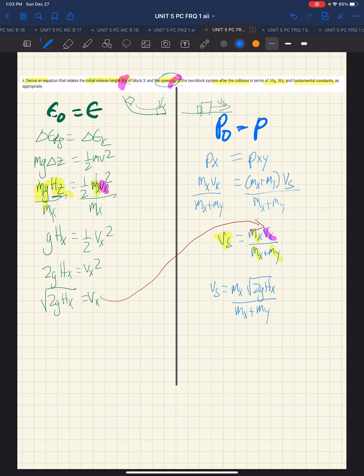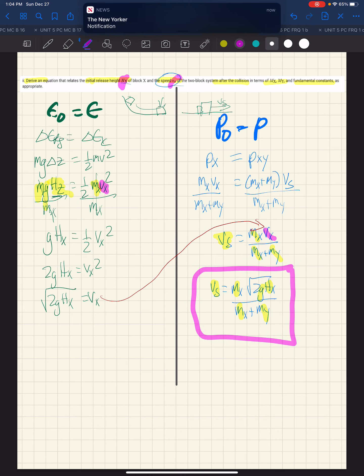And so, now we'll do a double check for what they're looking for. It says we need initial release height hx and vs. We can have mx and my and constants, g. That's the universal fundamental constant. So, we have our final answer, which is vs is mx times the square root of 2g hx all over the quantity mx plus my. Thank you, guys.